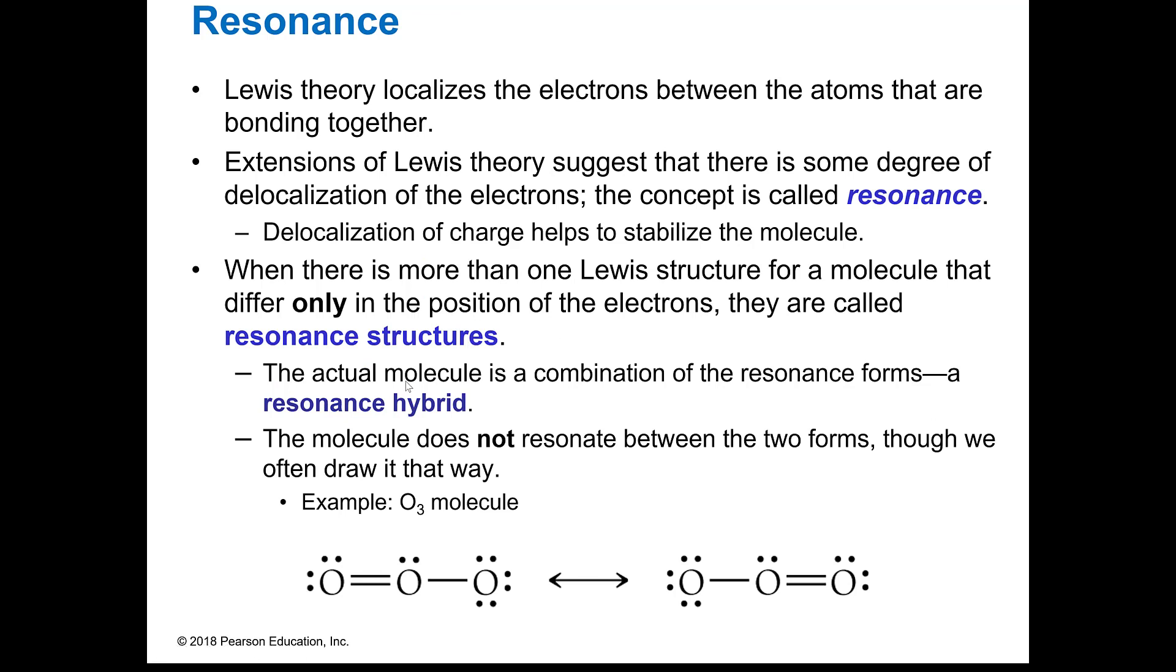In resonance, the electrons are localized between the atoms. They're not really flipping back and forth like we used to talk about it. It's not so much that it's resonating between two forms, but it's more like I have a double bond on one side and a single bond on the other and it becomes like two bonds that are like 1.5 if that makes sense.